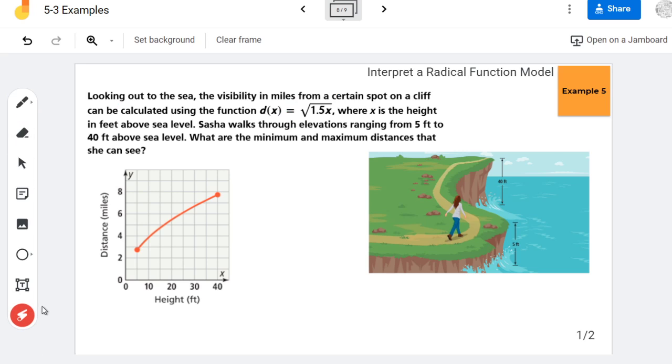So it says, looking out to sea, the visibility in miles from a certain spot on a cliff can be calculated using this function, where x is the height in feet above sea level.